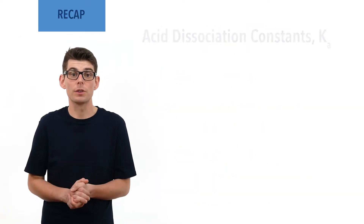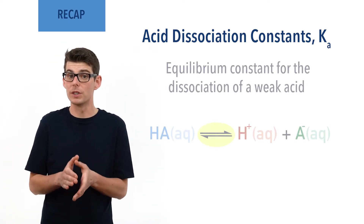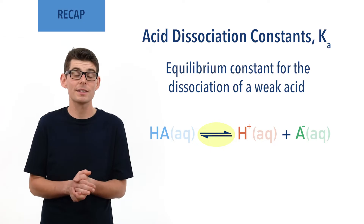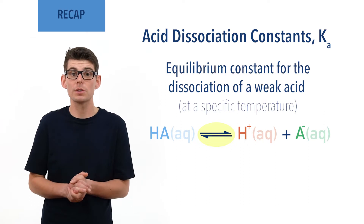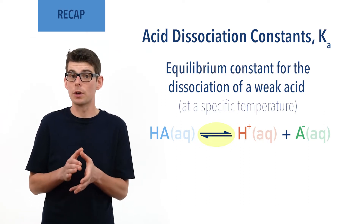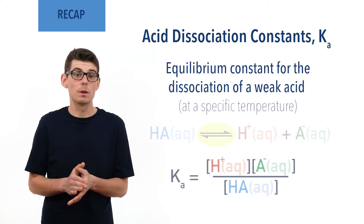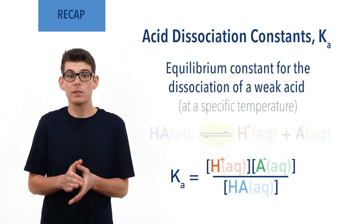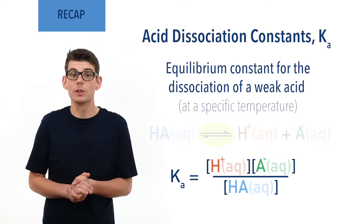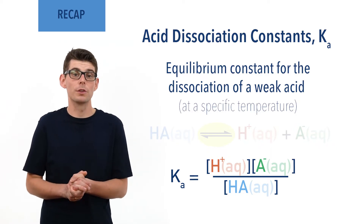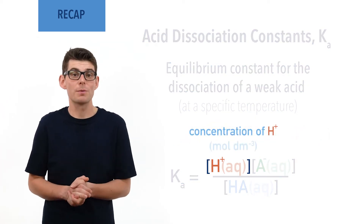Acid dissociation constants, Ka, are equilibrium constants that describe the position of equilibrium for the dissociation of a particular weak acid at a specific temperature. They are based on the concentration of weak acid molecules, H+ ions, and conjugate base ions at equilibrium, and can be calculated using the expression Ka equals concentration of H+ times concentration of A-minus divided by concentration of HA. Square brackets are used in the expression to represent concentration — for example, [H+] means concentration of H+ ions.